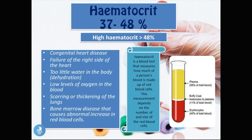A high hematocrit is anything above 48 percent. Causes include congenital heart disease, failure of the right side of the heart or cor pulmonale, dehydration, low oxygen levels in the blood known as hypoxia, pulmonary fibrosis, and a bone marrow disease called polycythemia vera that causes an abnormal increase in red blood cells.